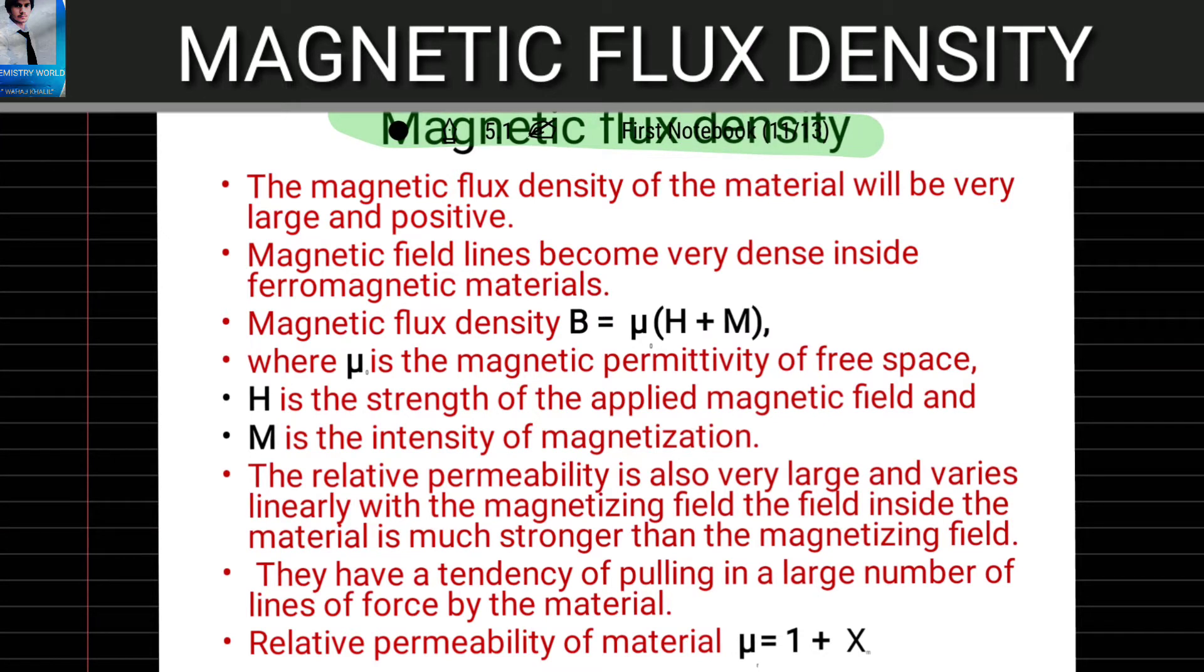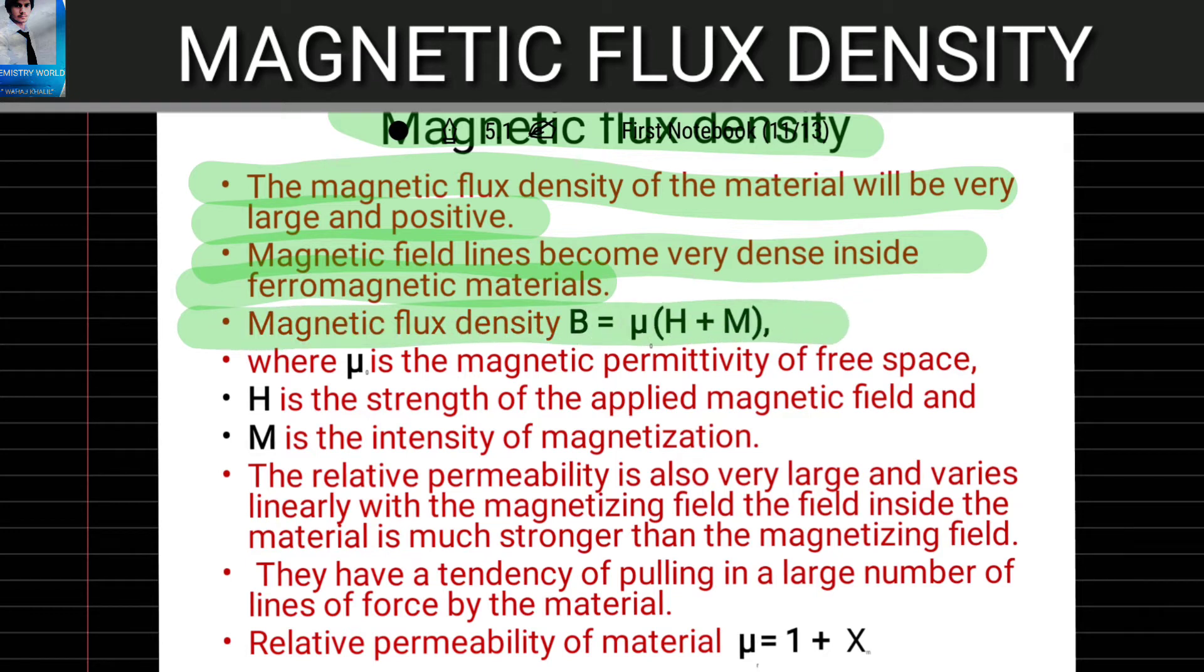The magnetic flux density of a material will be very large and positive. Magnetic field lines become very dense inside ferromagnetic materials. Magnetic Flux Density B equals μ(H + M), where μ is the magnetic permittivity of free space.